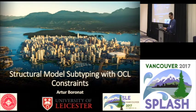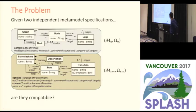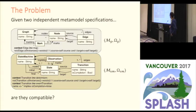The problem we are going to deal with in this talk is as follows: if we are given two modeling languages in terms of metamodels and well-formedness constraints — for example, here we have a metamodel that defines graphs with the notion of node, notion of edge, and nodes can be marked — and here we have a constraint that defines that only valid graphs in this metamodel are those that define function graphs.